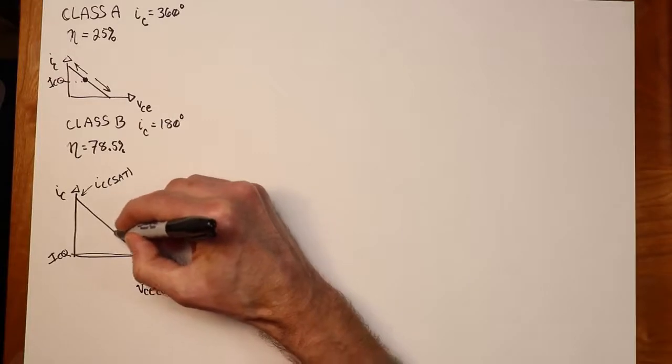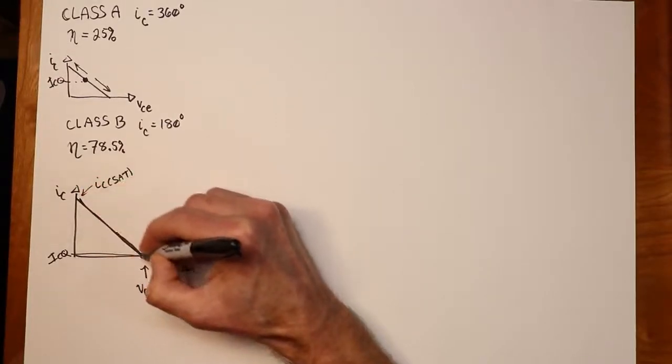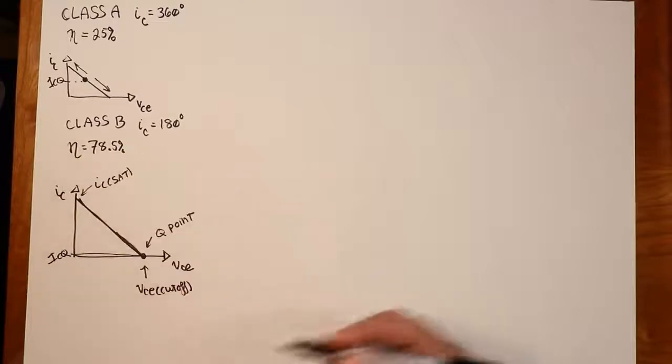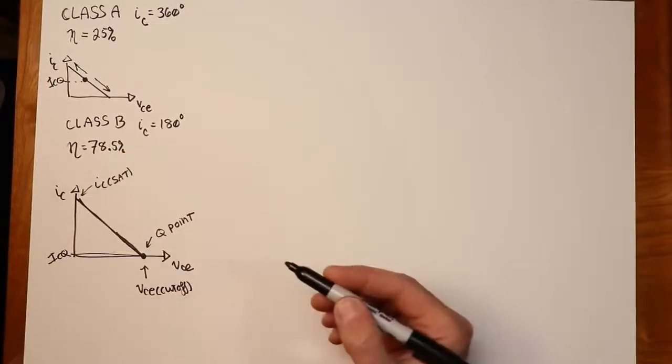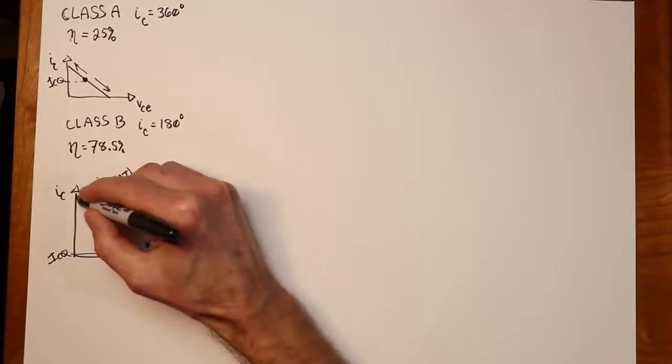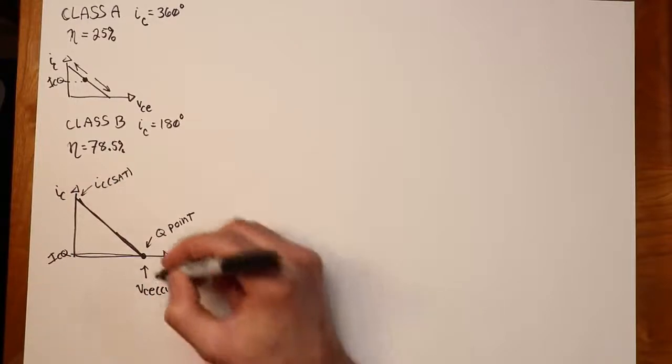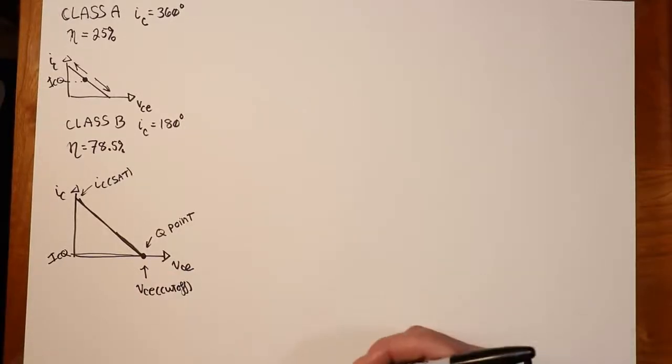Ultimately, we'll be able to swing all the way up to IC sat and back. So this will tell us what the compliance of the amplifier is. It'll basically be whatever the cutoff voltage is, as a peak value, because we can swing from there all the way up to saturation, which is zero volts for VCE. So whatever VCE cutoff works out to be, that'll be the peak compliance of our amplifier.